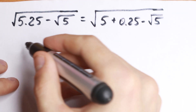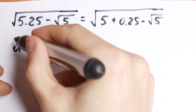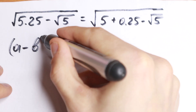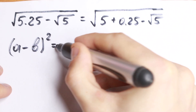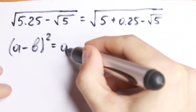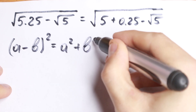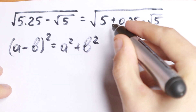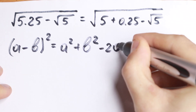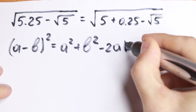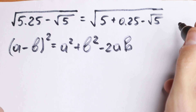If we write the formula (a minus b) to the second power, it will be equal to a squared plus b squared minus 2ab. So this is our formula.